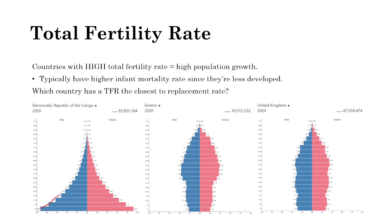The Congo has exponential population growth, so it has a very high TFR, probably with a very high infant mortality rate. Greece had some linear growth, then went stable, and is now decreasing — so its TFR is probably below replacement rate. The United Kingdom has been relatively stable recently, not increasing or decreasing much, so it's probably closer to the replacement rate of 2.1.